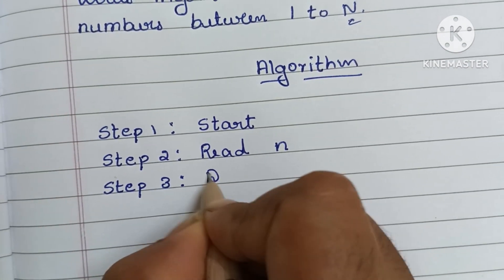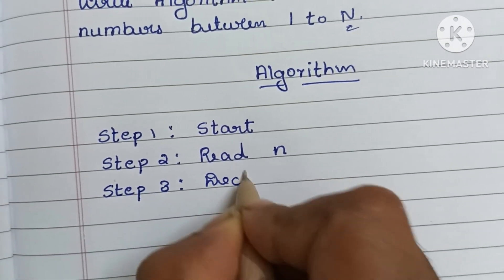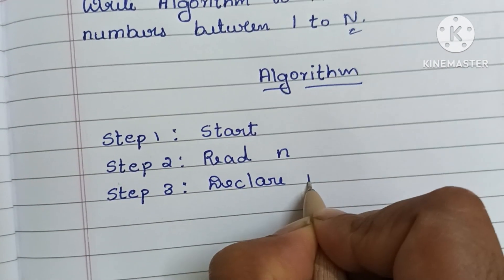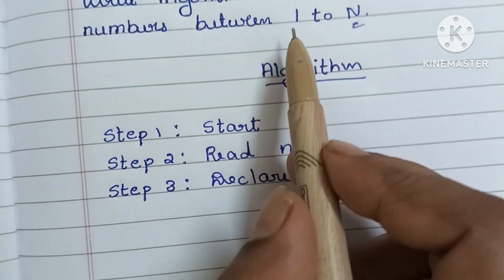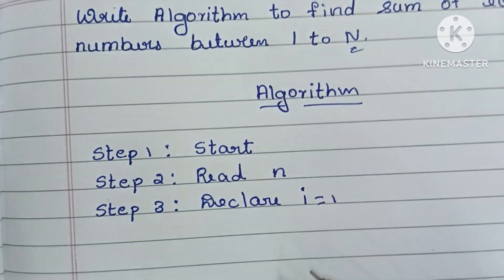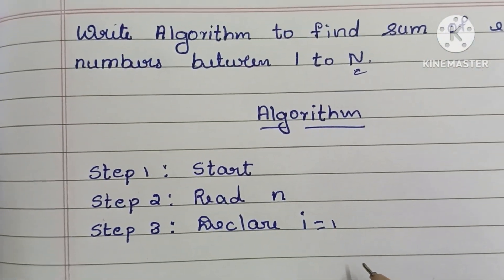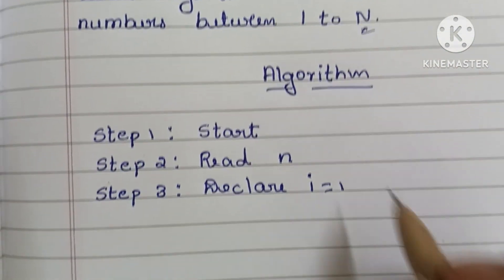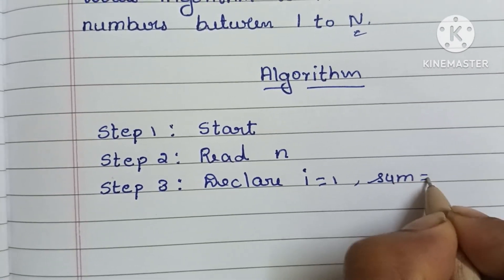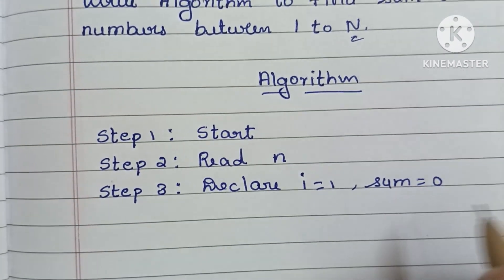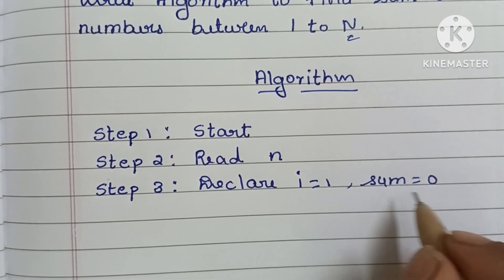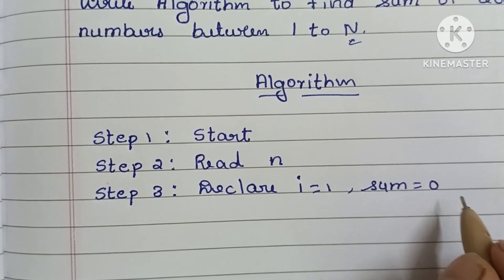Declare i equal to 1, since our initial value is 1. Next, initially sum is equal to 0, so we declare sum equal to 0.